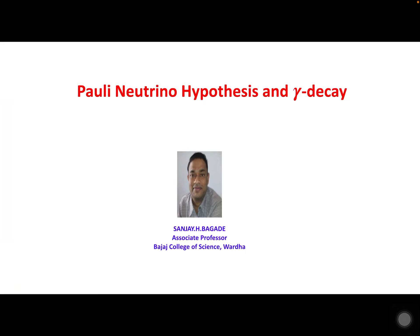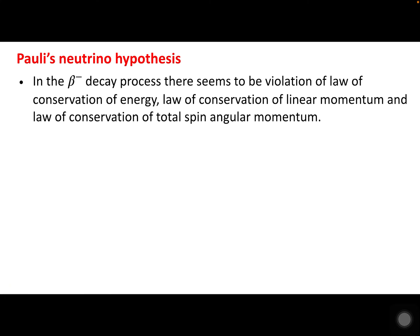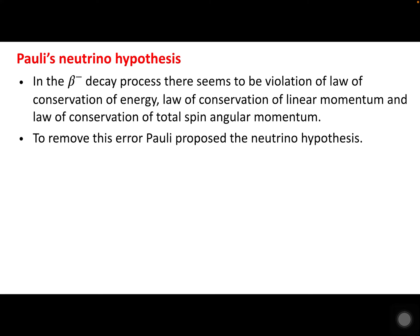Welcome to this lecture. Today we are going to see Pauli's neutrino hypothesis and also discuss the gamma decay process in nuclear physics. When we studied the beta decay energy spectrum, it could not be explained perfectly — there were discrepancies. These discrepancies included the violation of the law of conservation of energy, violation of the law of conservation of linear momentum, and violation of the law of conservation of total spin angular momentum.